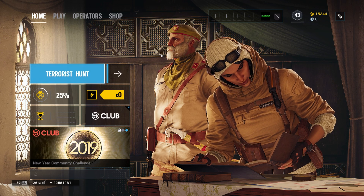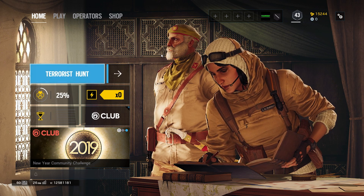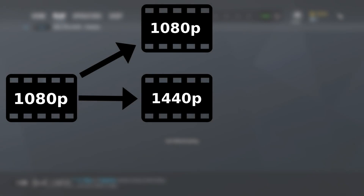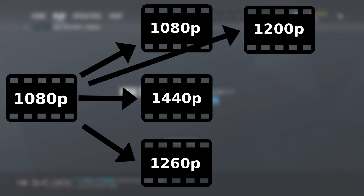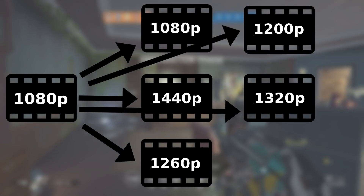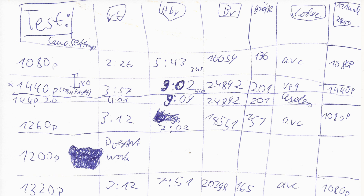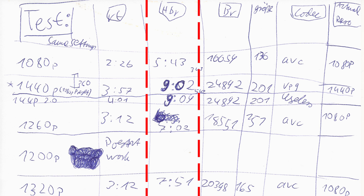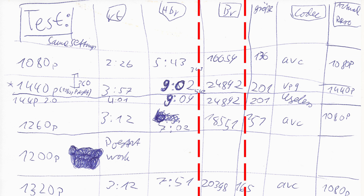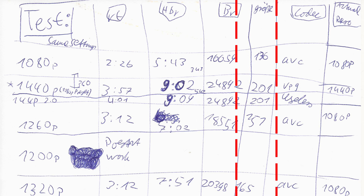So what I did was I had a 1080p video and rendered it at different resolutions: 1080p, 1440p, 1260p, 1200p, 1320p, and 1422p. I compared the render times, the Handbrake compression times, the bitrate, and the file size. Then I uploaded them all to YouTube to see which ones would get the VP9 codec.